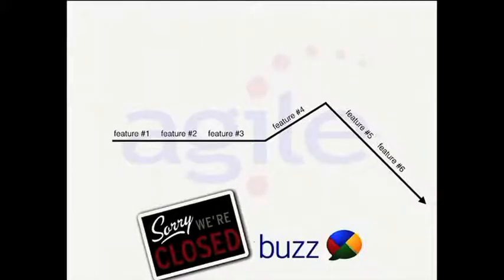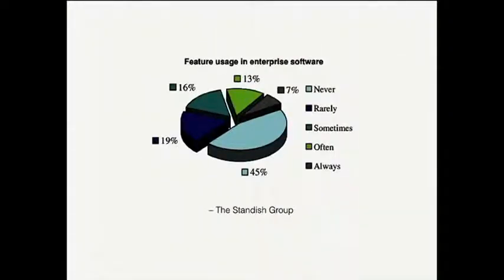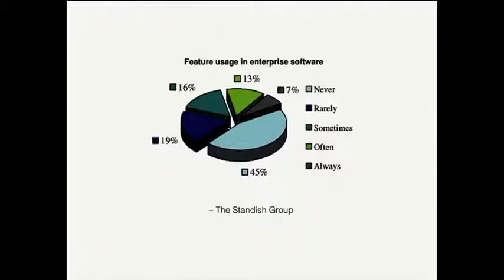If you think Google Buzz or other projects nobody needed is the biggest problem of this industry or is limited to Google, you're wrong. The Standish Group — an organization that for a decade was committed to capture, gather, and analyze information about software projects, functionalities, and how people use them — found some really crazy stats. 45% of all delivered features for every project are never used. Only 7% of the features you deliver are used by your customers constantly.